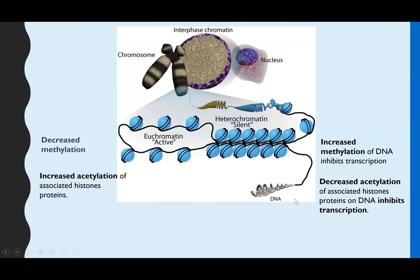In summary: heterochromatin is when the DNA is tightly coiled and transcription is inhibited, caused by increased methylation and decreased acetylation. Euchromatin, or chromatin, is when transcription will occur, caused by decreased methylation and increased acetylation.